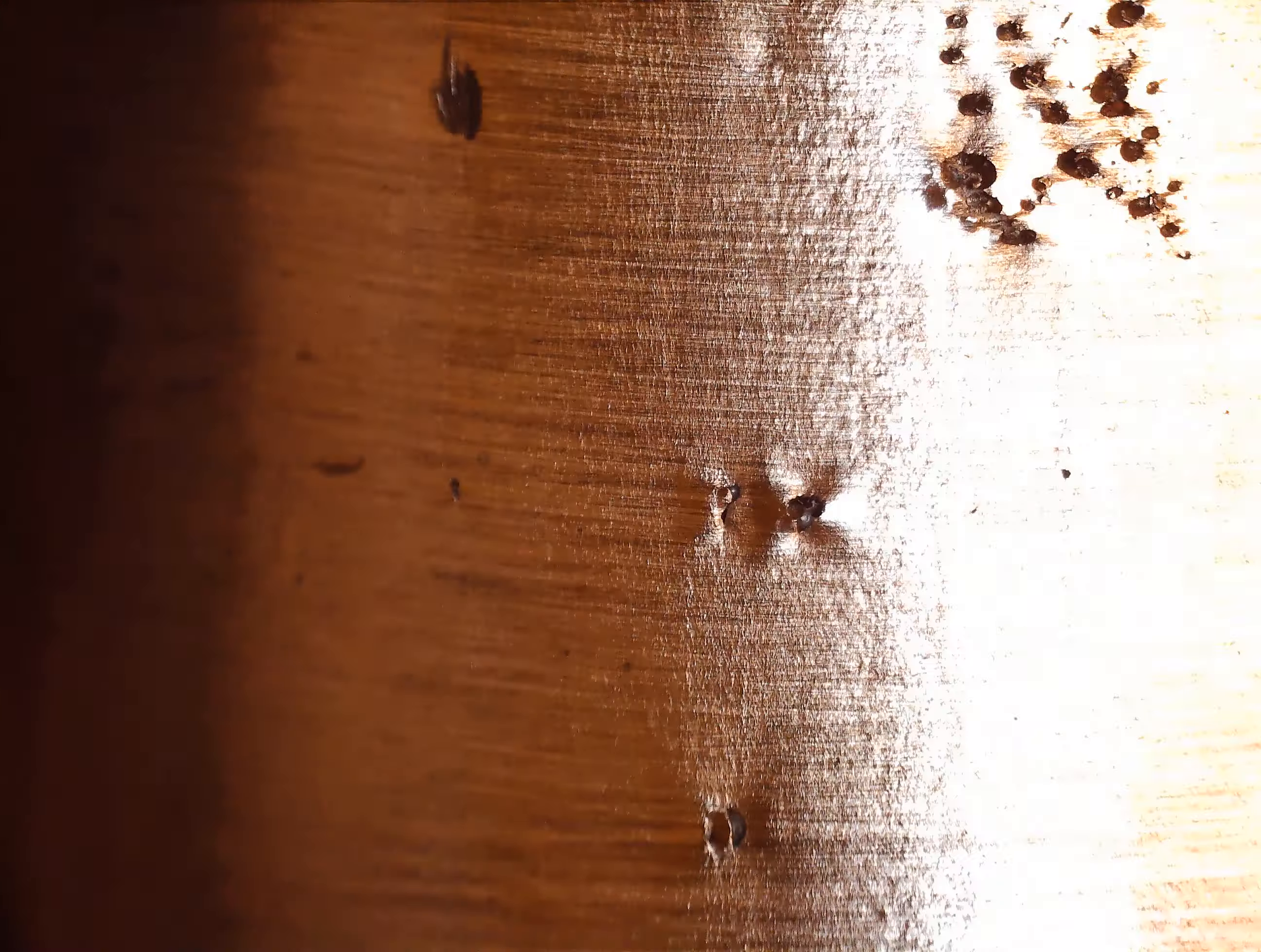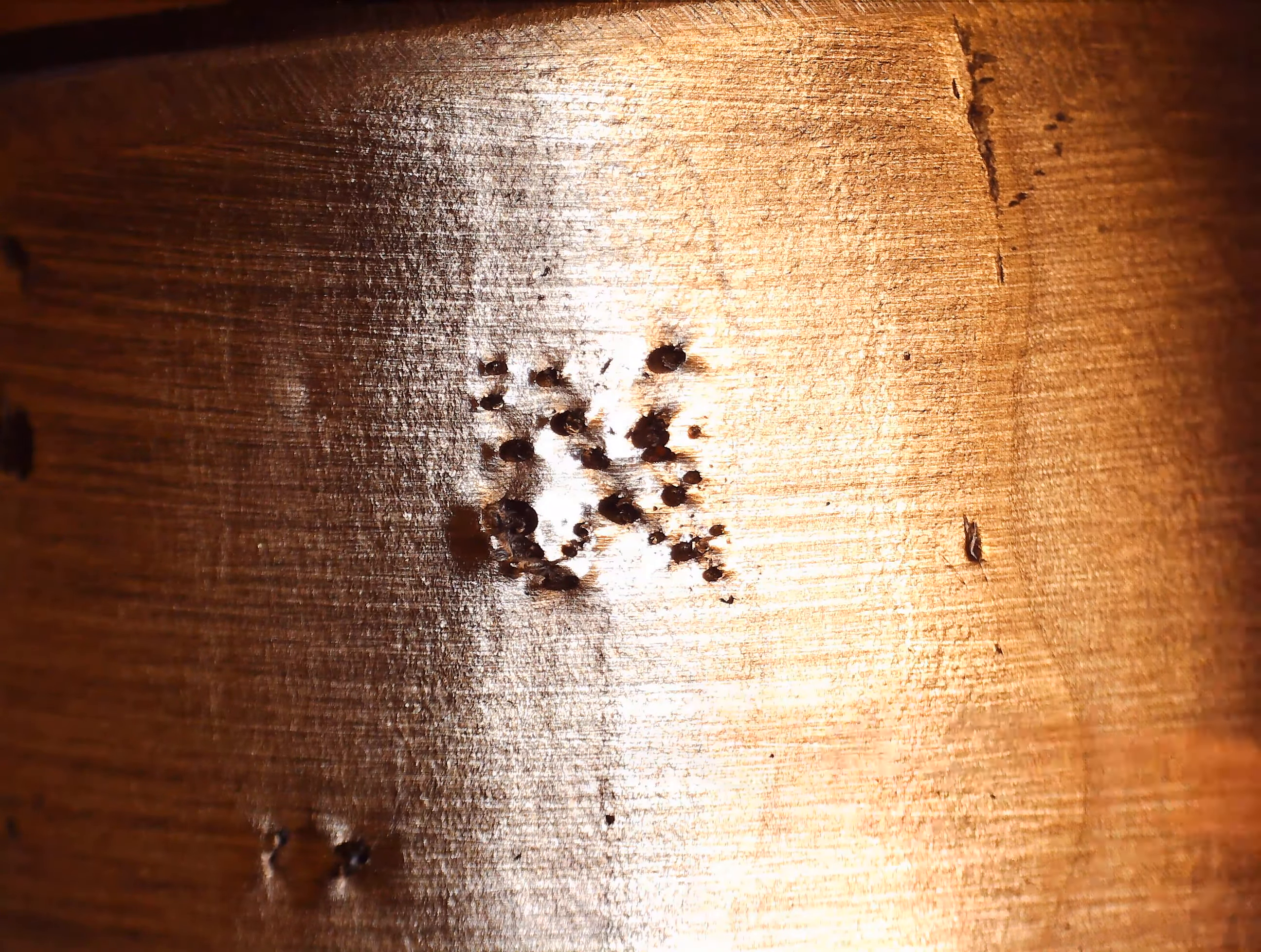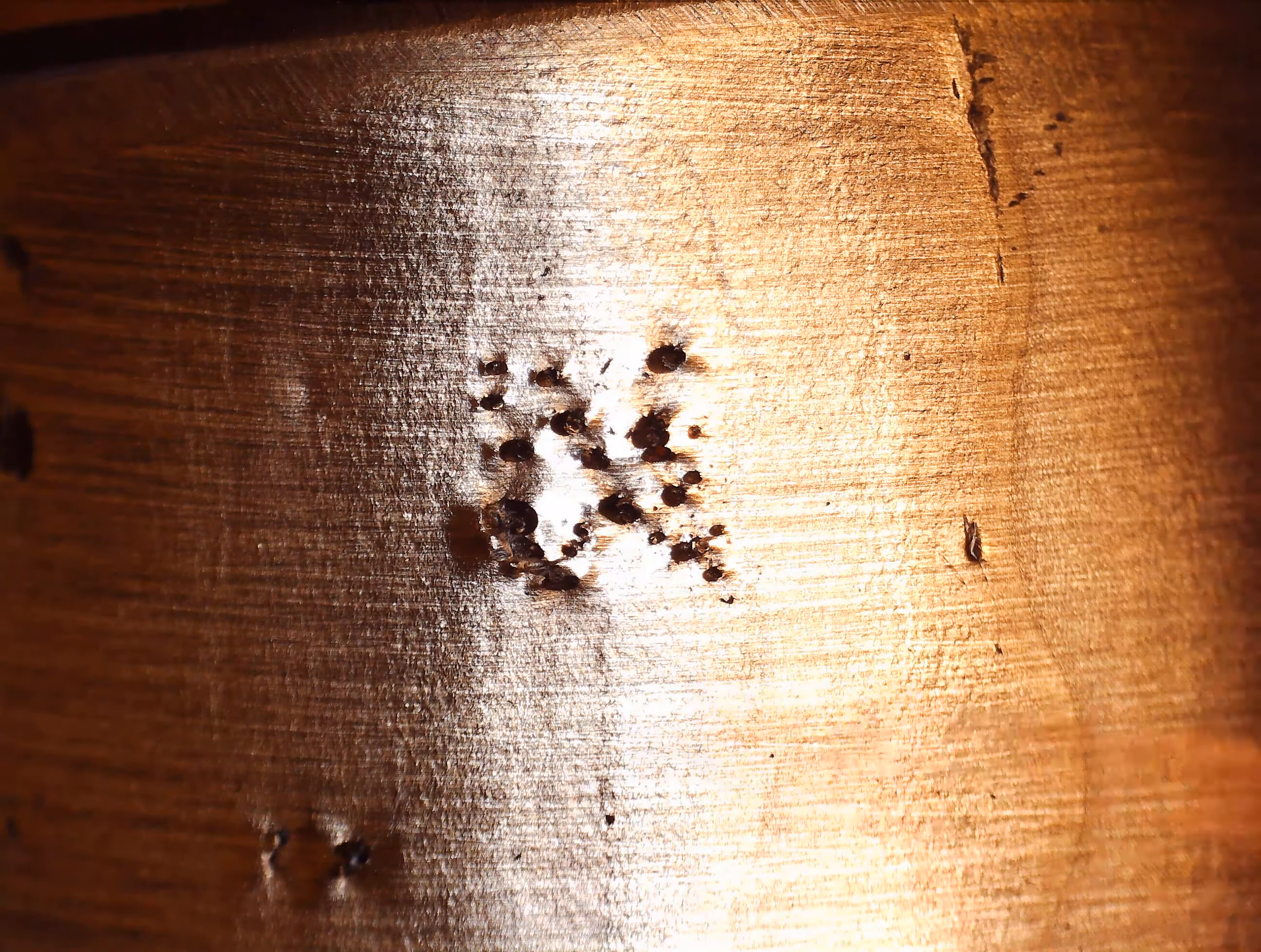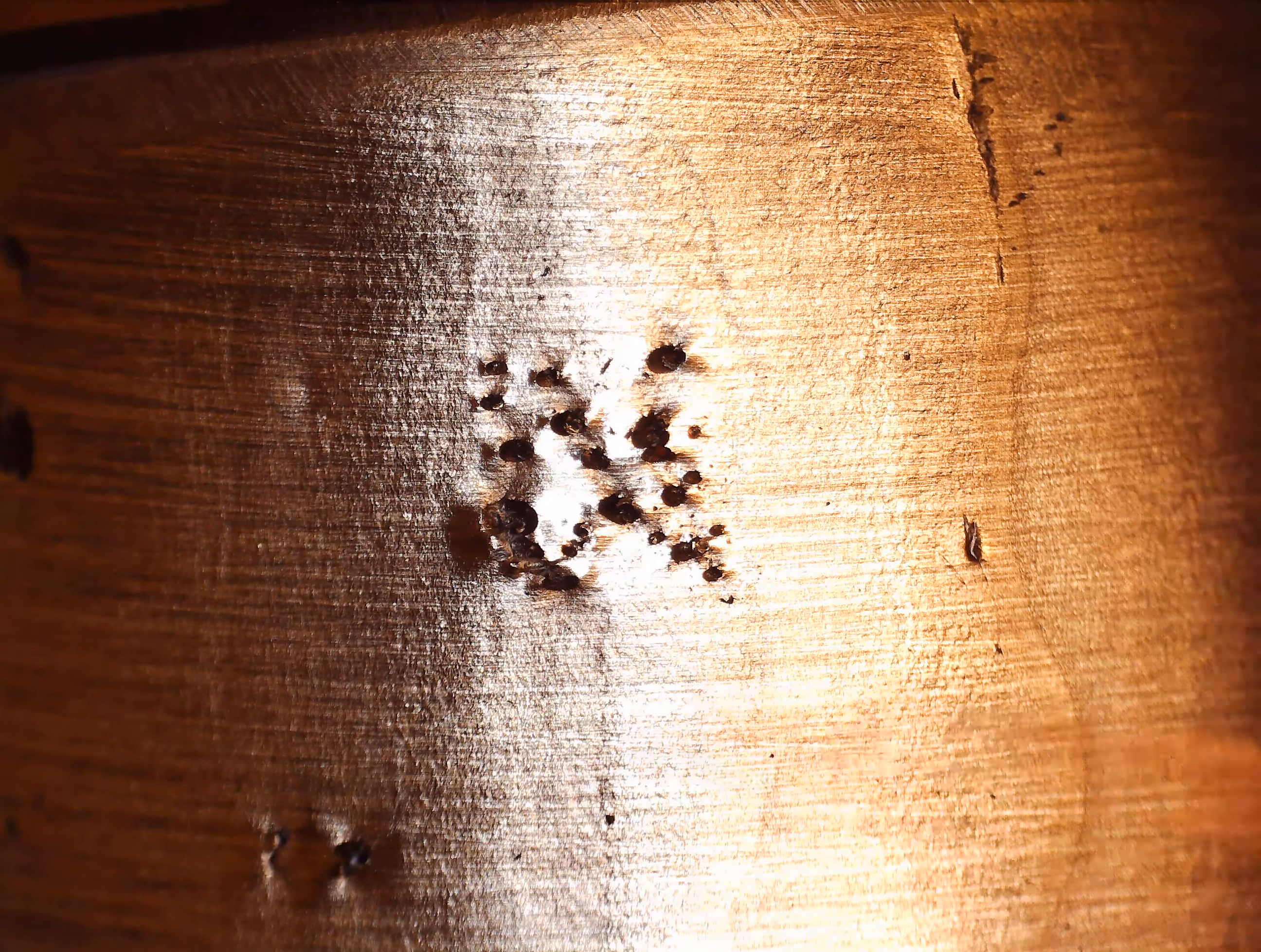That area right there is also undercut, and that one's undercut. So this is that main cluster of porosity that was shown in the specimen before. It looks like right here there's 1/32 inch, and right there there's another 1/32 inch.